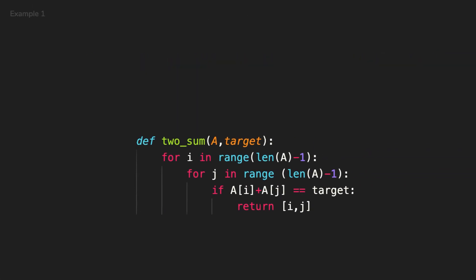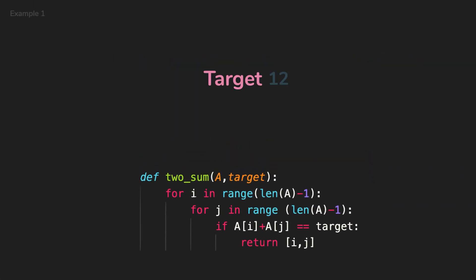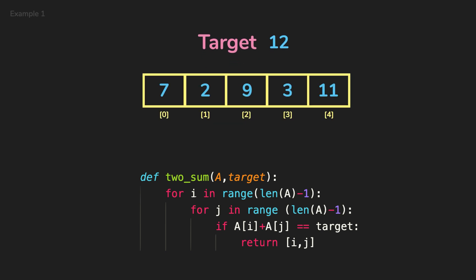Let's look into an example. This example is about finding the two numbers in an array that sums up to the target. Let's say you can use the same number twice. For example, if the target is 12, and its input array is 7, 2, 9, 3, 11, it will return the indices of the values 9 and 3.